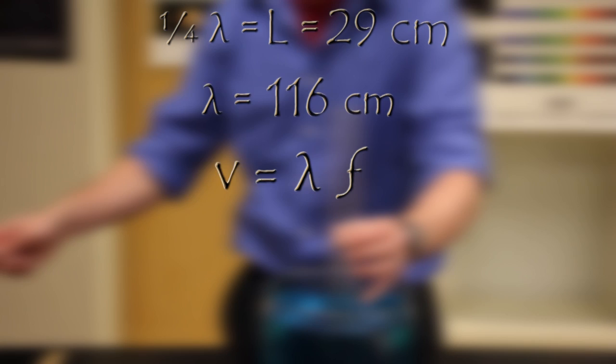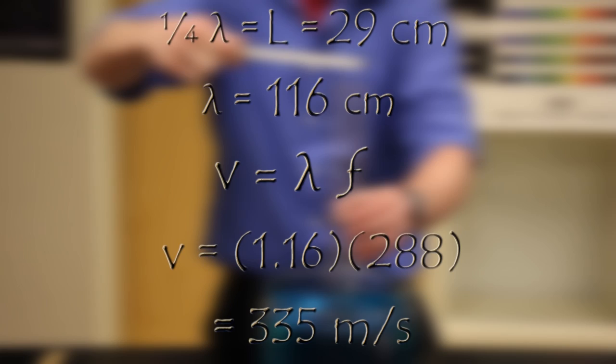That makes the full wave about 116 centimeters. By v equals lambda f, velocity equals wavelength times frequency, the speed of sound is about 335 meters per second. Very close.